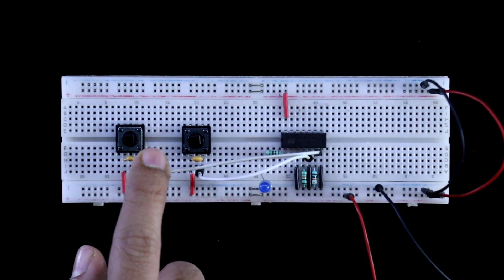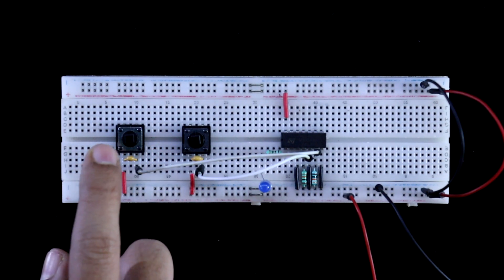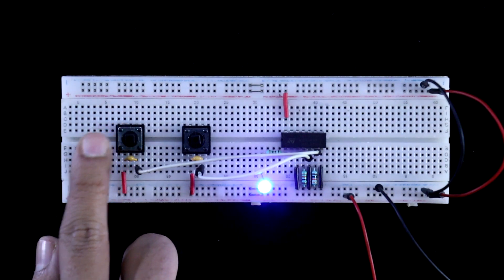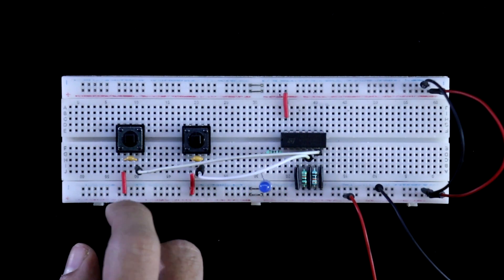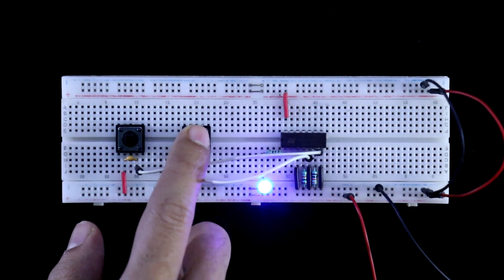Here we have two push button switches. This switch is for ON, and to turn off we have to use this switch. So it is for ON, it is for OFF.